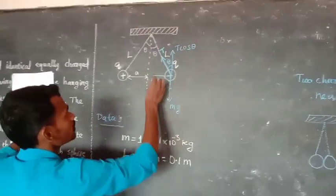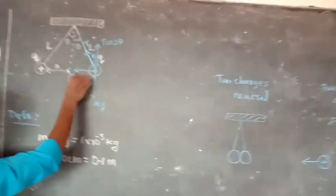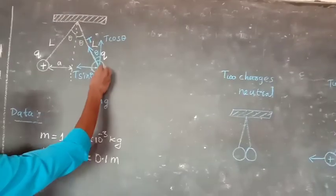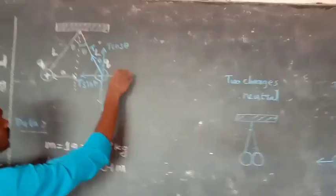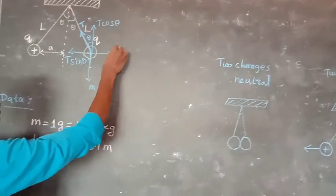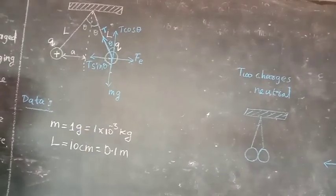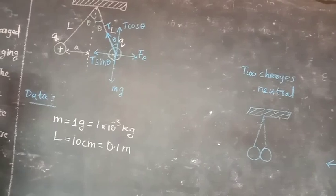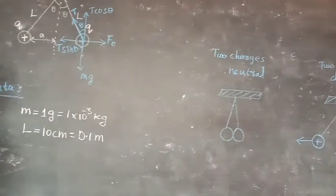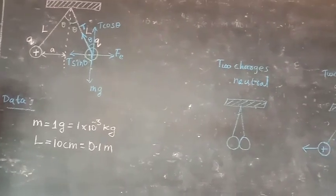We have force components: T·sinθ equals the electric force F, and T·cosθ relates to the other component. This gives us S1, T-S5, and related force equations for the equilibrium.